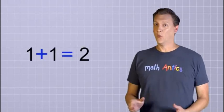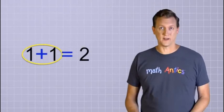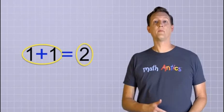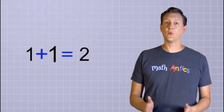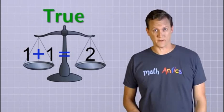For example, in the equation 1 plus 1 equals 2, 1 plus 1 doesn't look like the number 2, but we know that 1 plus 1 has the same value as 2. So, 1 plus 1 equals 2 is in balance. It's a true equation.